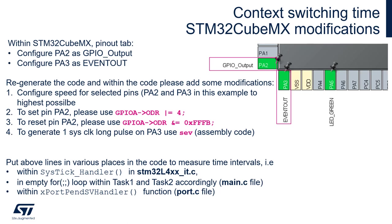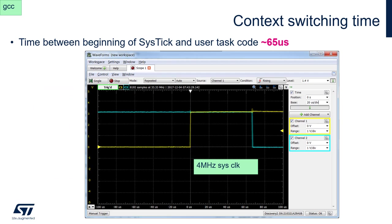Here is an example of context switch time for an STM32L4 running at 4MHz system clock. The time measured between the beginning of the SysTick procedure and new task code execution is 65 microseconds at 4MHz. On the oscilloscope, the blue channel shows the new task code execution — changing the state of an IO from high to low — and the yellow channel reflects an operation done at the beginning of SysTick. The distance between the rising edge within SysTick and the falling edge at the beginning of the new task is 65 microseconds.